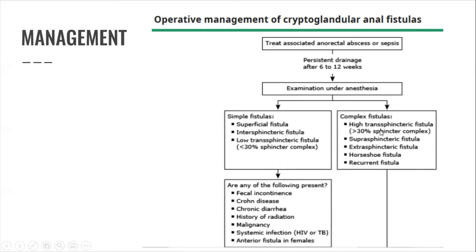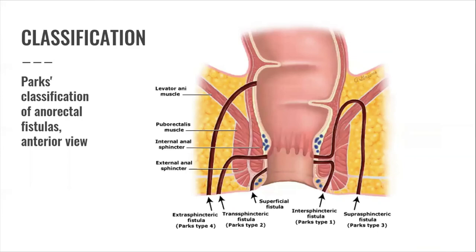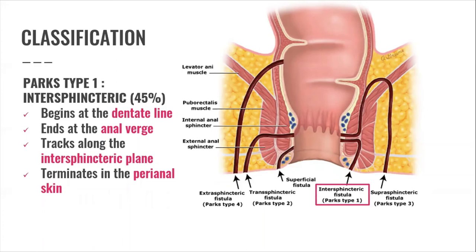The classification of anal fistulas as described by Parks, Gordon, and Hardcastle is the most common classification used. It describes the fistula tracts and predicts their complexity. Parks type 1, or intersphincteric, is the most common at 45%. It begins at the dentate line, ends at the anal verge, tracks along the intersphincteric plane, and terminates in the perianal skin.